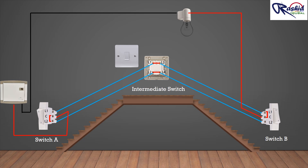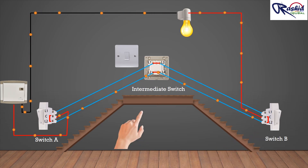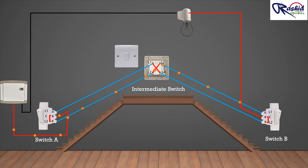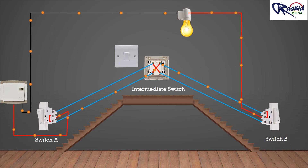When we turn the power on, electricity can flow through switch A and the intermediate switch and into switch B. But the circuit is broken at switch B, so the light will stay off. If we then flip switch B, we complete the circuit and the light turns on. If we flip the intermediate switch, the current route will change and the circuit is broken again at switch B, so the light turns off. Once we flip switch B again, the circuit completes and the light turns on.